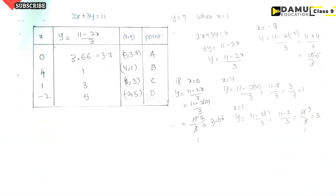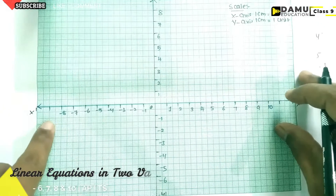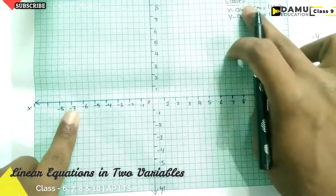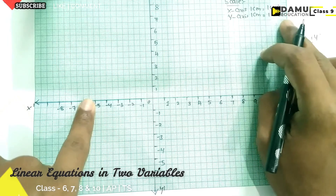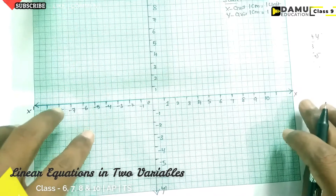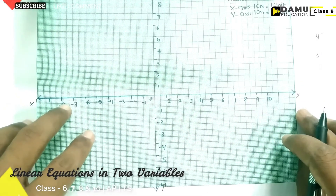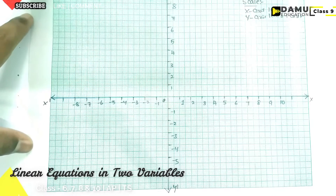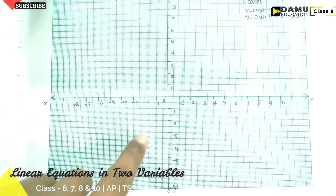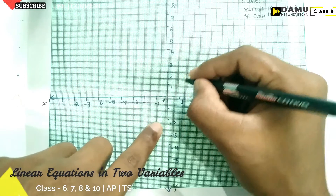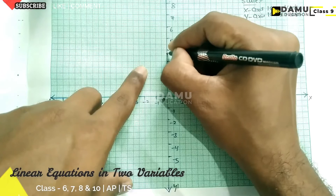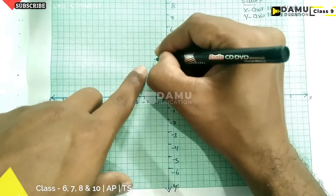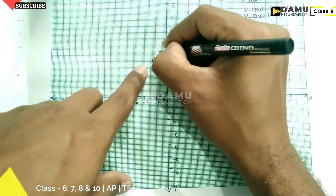If we take more points, we can understand better. Now we are going to construct our graph with these values. The scale we take is: x-axis equals 1 centimeter per 1 unit, and y-axis equals 1 centimeter per 1 unit. Let us find what the points are. The first point is (0, 3.7).